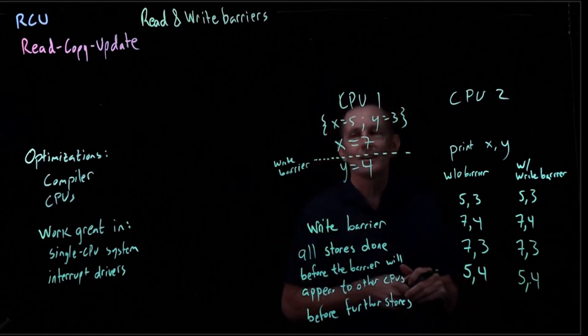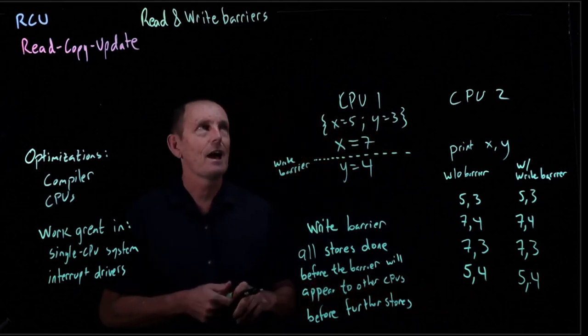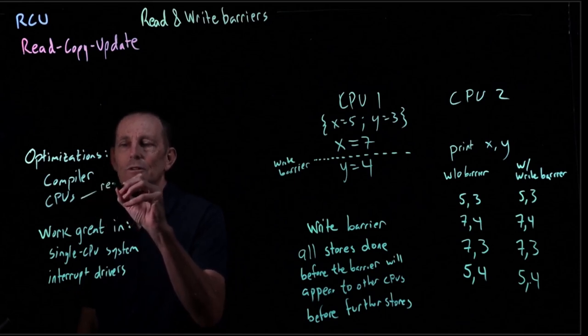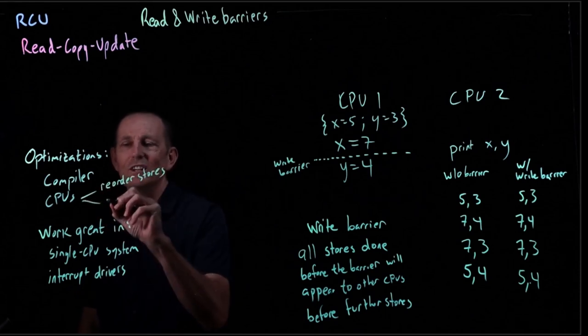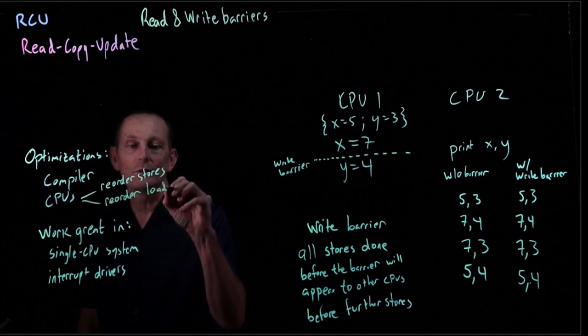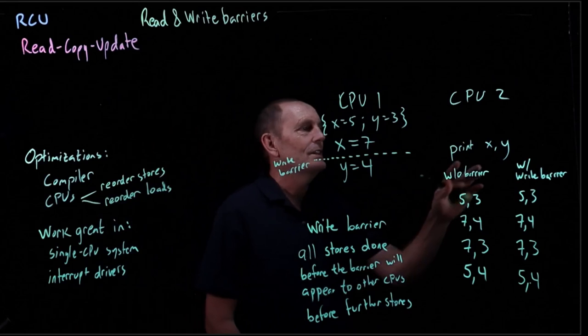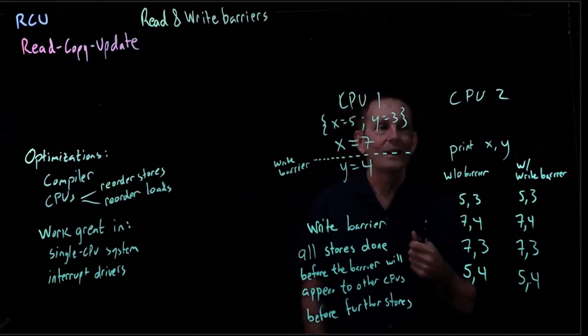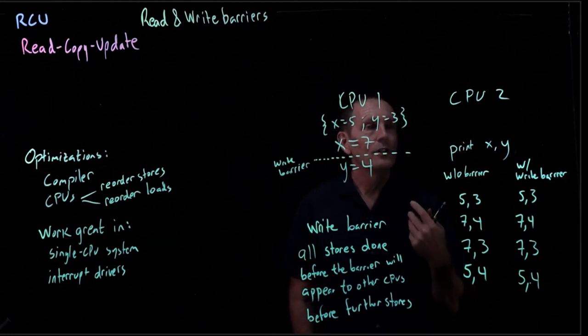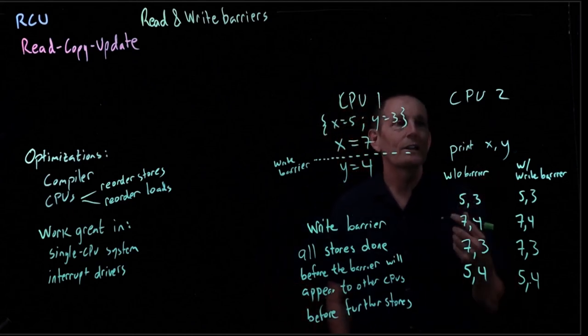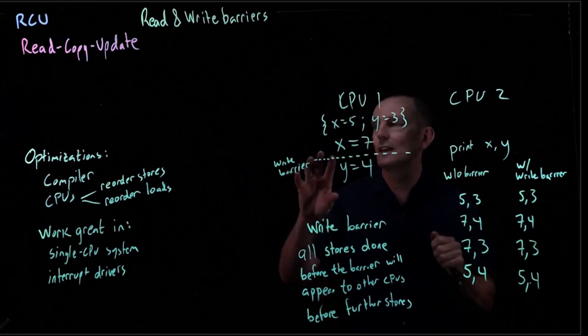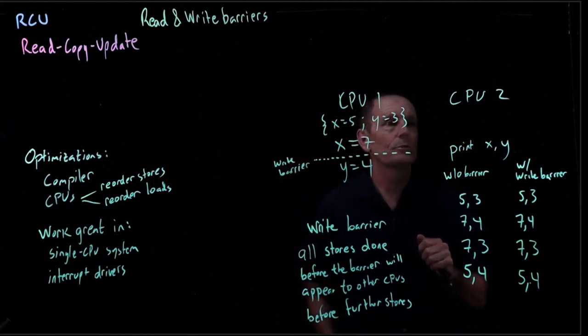So although the stores have happened in the correct order, there's another kind of optimization that can happen. Optimization number one that the CPU can do is it can reorder stores. Optimization number two is it can reorder loads. So if we imagine this print x y is going to load x into some register, load y into another register, and then push those on the stack, the order of those loading x into register, loading y into register can change. And in fact, that is something that x86 will do.